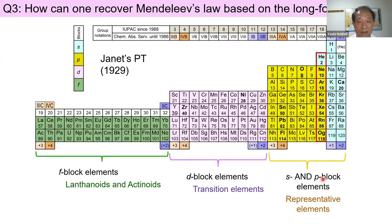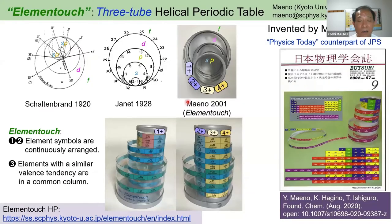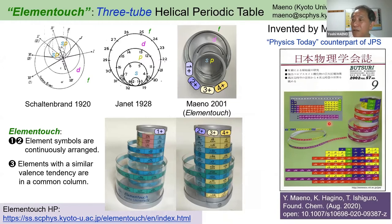The answer is to rearrange elements in a three-tube helical periodic table. I invented this about 20 years ago and named it the Element Touch periodic table — meaning 'touch all the elements,' with a hidden Japanese poem in the word. This was the cover page of the monthly journal distributed to all members of the Japanese Physical Society — the Japanese counterpart of Physics Today.